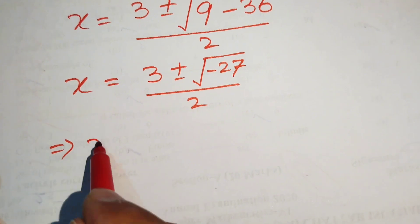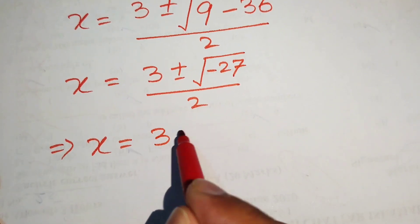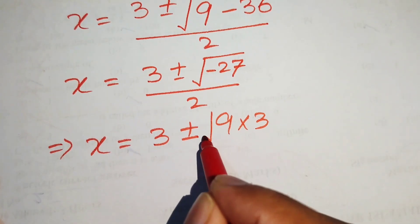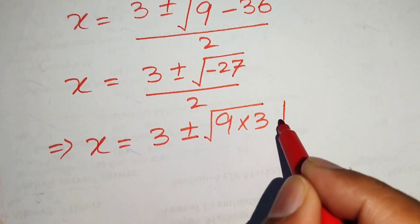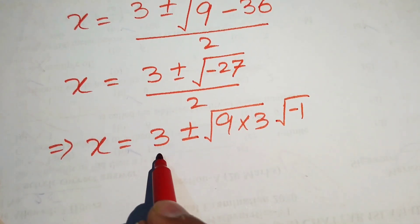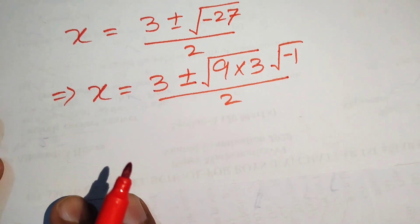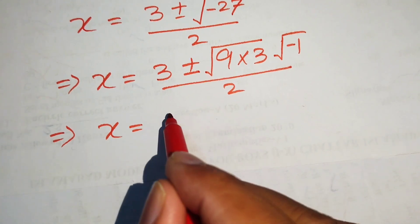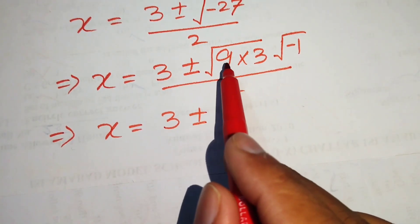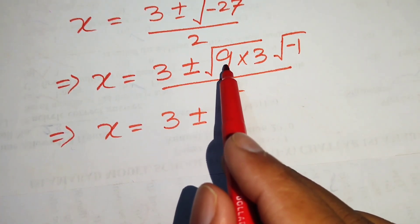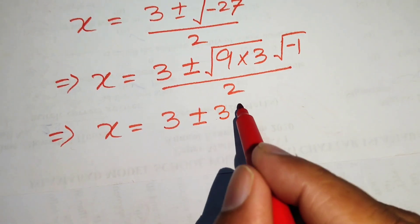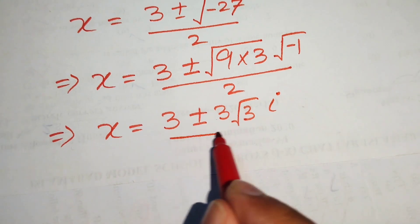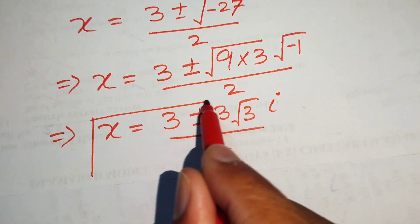We write minus 27 as 9 times 3 times minus 1. Taking the square root: square root of 9 is 3, square root of 3 stays as root 3, and square root of minus 1 is iota (i). So x equals (3 plus or minus 3 root 3 iota) divided by 2.